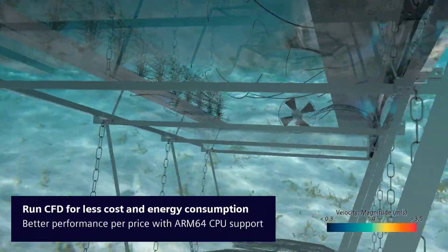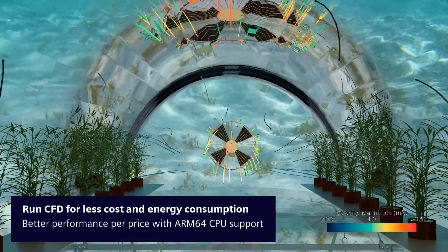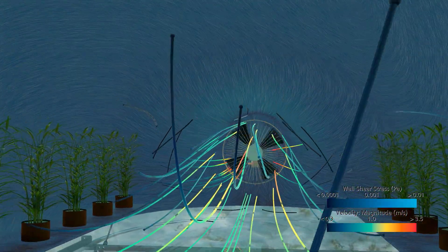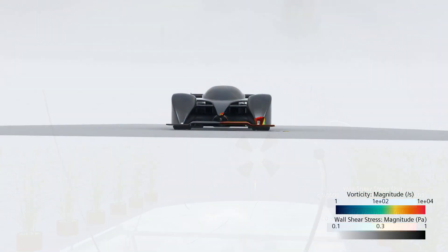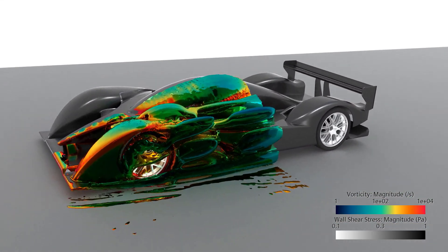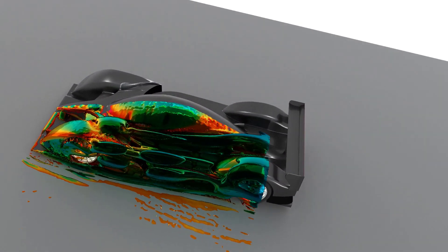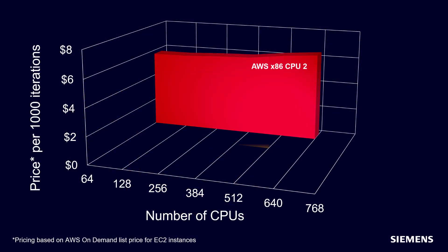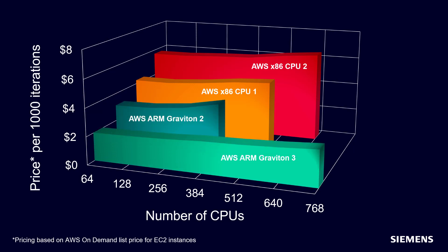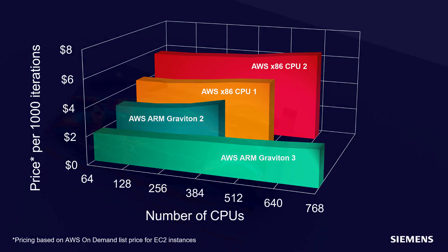Optimizing energy consumption and cost associated with high fidelity simulations becomes an increasingly important business success factor. With Simcenter Stasis Mplus 2302 you can run CFD simulations for less cost and energy using ARM64 CPU technology. And while ARM64 support opens another avenue to the latest CPU technology, we continue our efforts on GPU-enabled acceleration of your CFD.